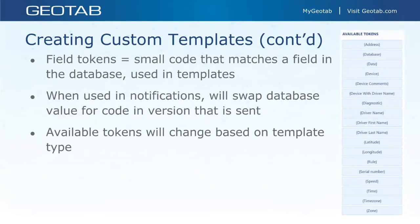All custom templates use what are called field tokens. A field token is a small code that matches a field in the database. When used in notifications, it swaps the database value for the code in the version that is sent. So if I use the token for 'address,' it'll populate with the address of the exception. Tokens are available for things like date, device, and address. The tokens available will change based on the template type.